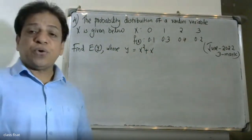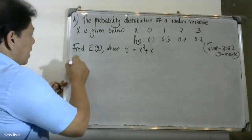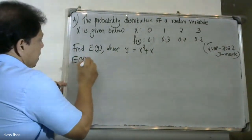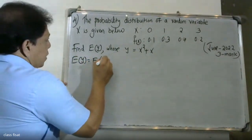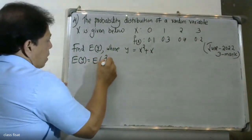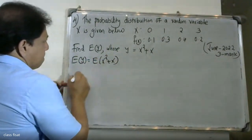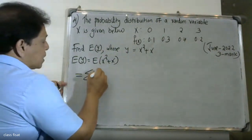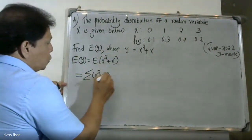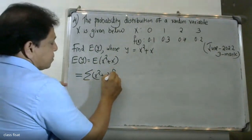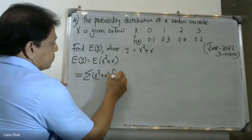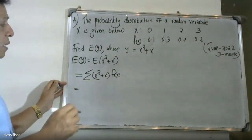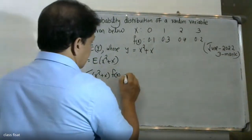Expectation of Y equals expectation of X squared plus X, which equals the summation of (X squared plus X) times f(x). Now let's substitute the values.